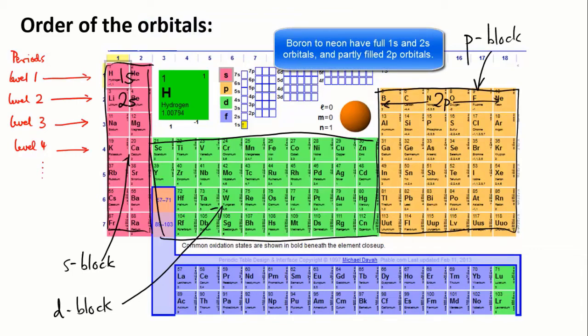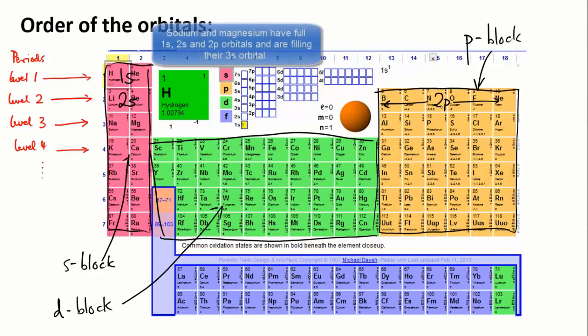So, I've gone 1s, 2s, 2p. Moving into the next period, we have the 3s orbitals. And then across further, and we get the 3p orbitals.